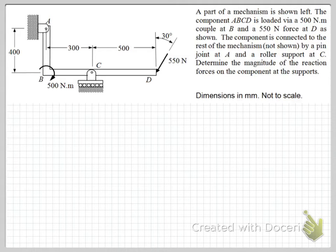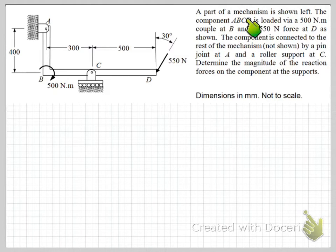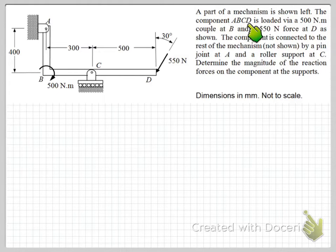Let's start by reading through and understanding the question. We've got a diagram and some information. We're told that what we're looking at is part of a mechanism, and the component we're particularly interested in is the component labelled ABCD — so A to B to C to D, all one component.